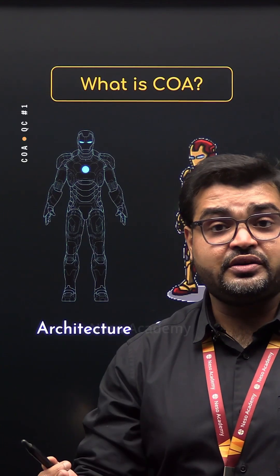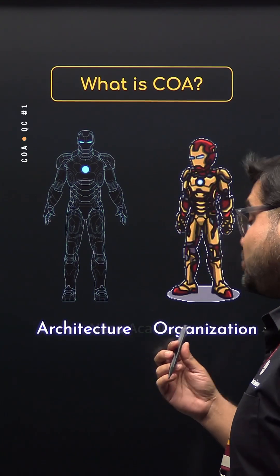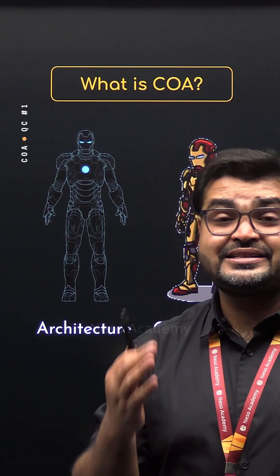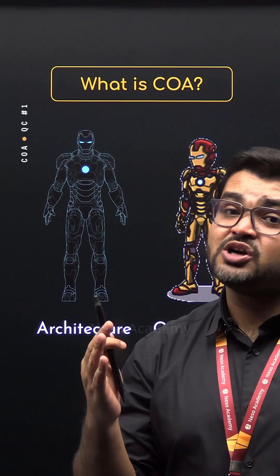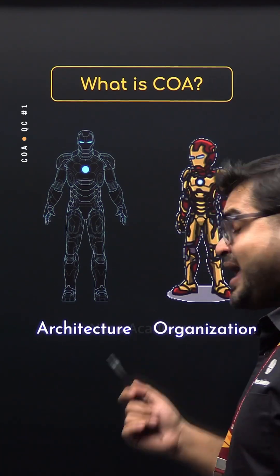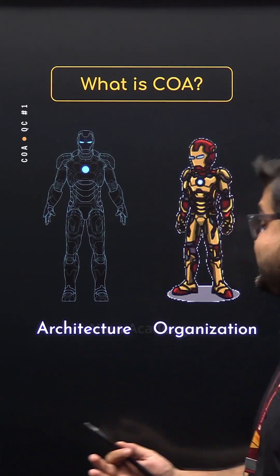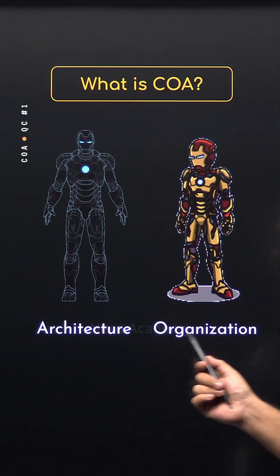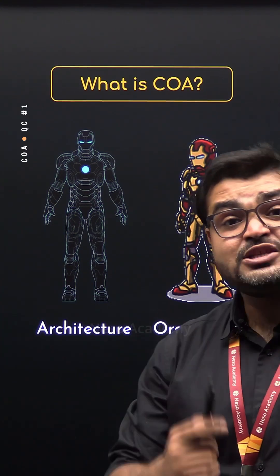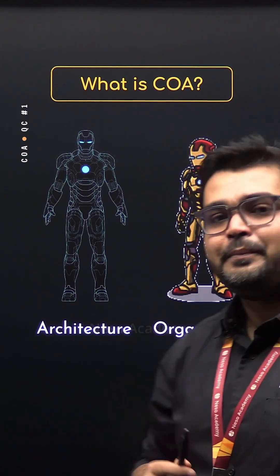So to create something extraordinary, whether it is an Iron Man suit or a computer, it starts with a solid plan — the architecture — and ends with the precise execution, or the organization. And that's what COA is all about.